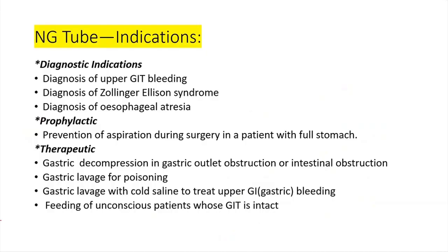The indications for using an NG tube are classified into diagnostic, prophylactic, and therapeutic. For diagnostic uses: diagnosis of upper GI bleeding — when you pass the NG tube you see blood drainage; diagnosis of Zollinger-Ellison syndrome by aspirating and measuring gastric content; and diagnosis of esophageal atresia, where there is failure of passage of the NG tube due to atresia.